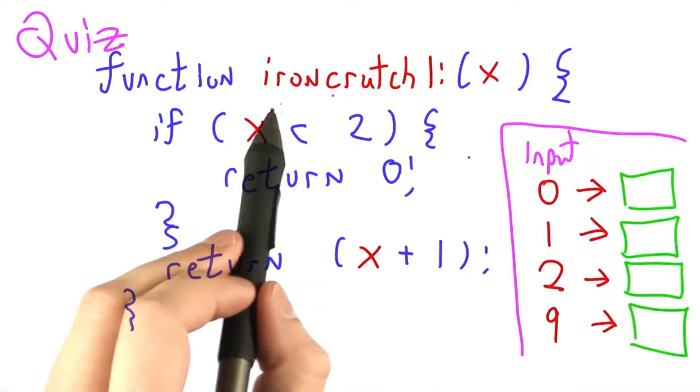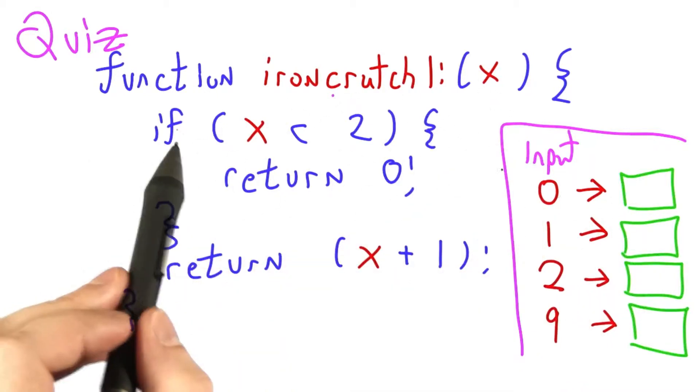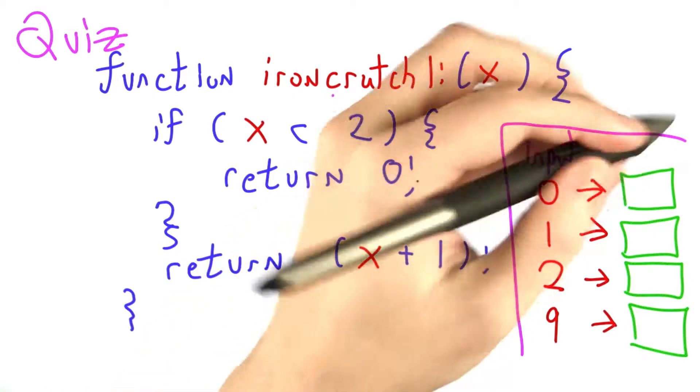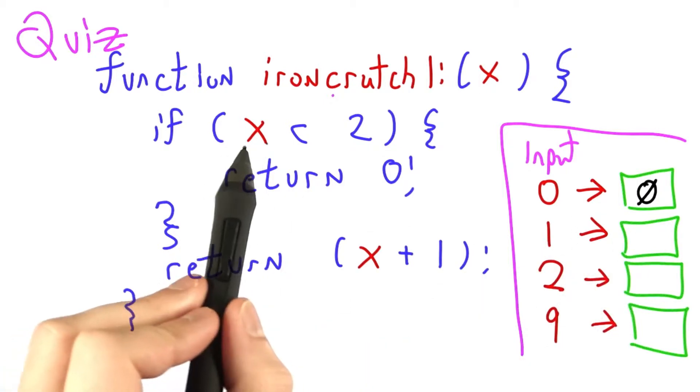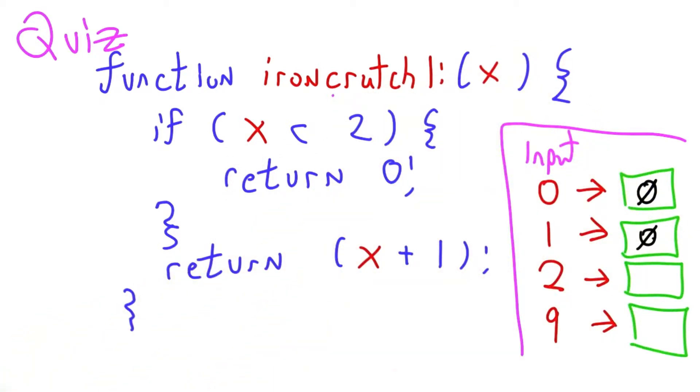Let's go through the answers together. If we call ironcrutchlee with x is 0, then 0 is less than 2, so we're going to return 0. If we call ironcrutchlee when x is 1, 1 is also less than 2, so we still return 0.